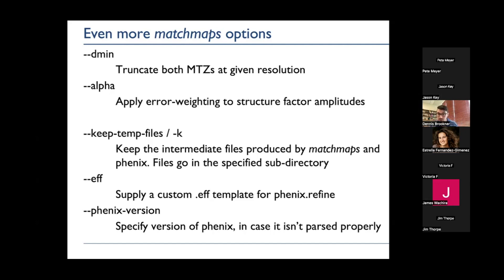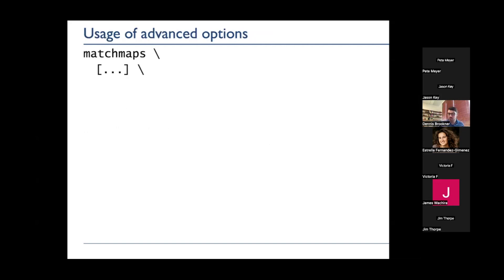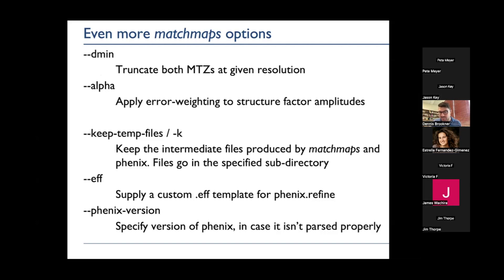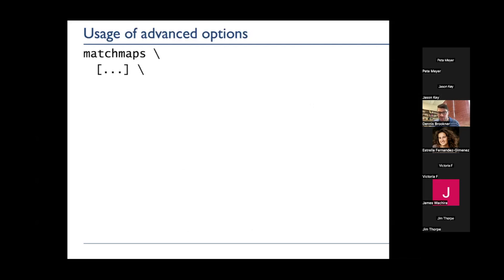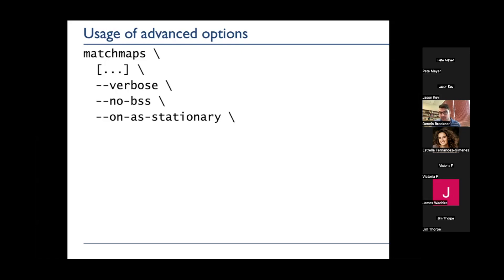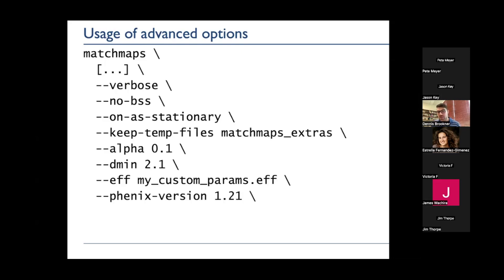MatchMaps handles both Phenix 1.20 and earlier syntax and Phenix 1.21 syntax, and should automatically check your command line environment for which version you're using and apply the appropriate parameter names. If that's not working, there's a backdoor to override your Phenix version. And just to clarify the syntax: some flags do not take any argument — just the existence of the flag turns on the behavior — whereas other flags do take an argument, expecting either a number or a string.